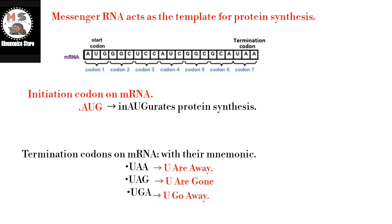Termination codons on mRNA, with their mnemonics: UAA — you are away. UAG — you are gone. UGA — you go away.